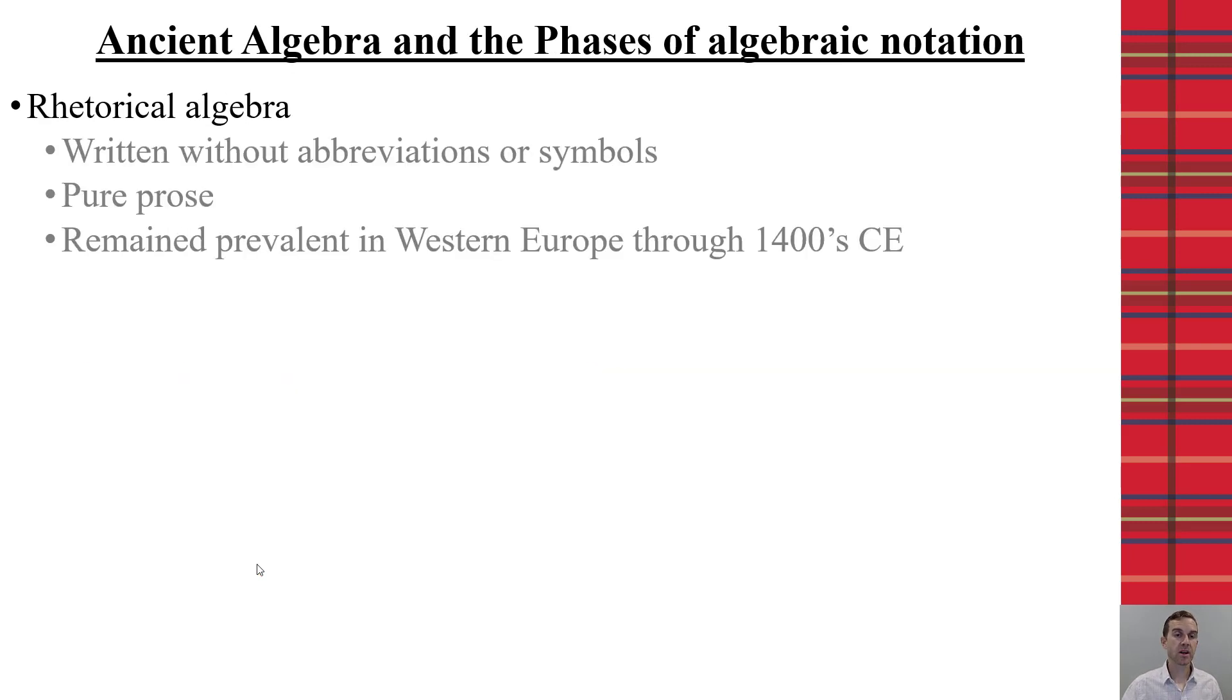Now, when we look at algebra, because we focus so much on trigonometry and geometry, algebra was being completed at that time. For much of the early prevalence of algebra, it was done as a rhetorical algebra. This meant that it was done primarily in prose. It did not use symbols and abbreviations like we think of today. And honestly, the rhetorical algebra remained the primary method in much of the ancient civilizations up until about 1400 CE in Western Europe. And then we see a change.